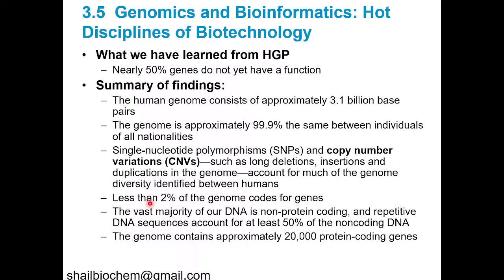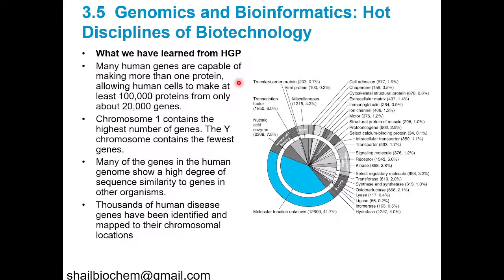Only 2% of the genome codes for genes. The vast majority of the DNA is non-protein coding. Repetitive DNA sequences account for at least 50% of the non-coding regions. The genome contains approximately 20,000 protein-coding genes. However, many human genes are capable of making more than one protein, allowing human cells to produce at least 100,000 proteins from only 20,000 genes.